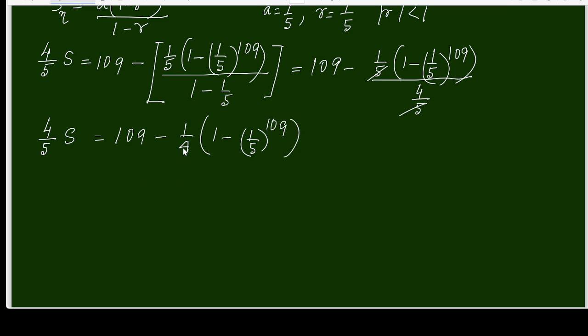Now we will come to the expression. I can separate S here: S equals 5 by 4 multiplied here, so 5 by 4 times 109 minus 1 by 4 times (1 minus 5 power negative 109).